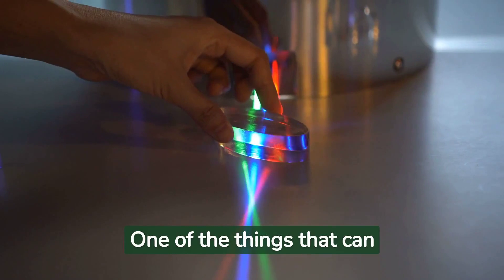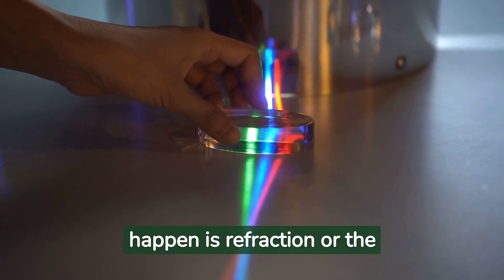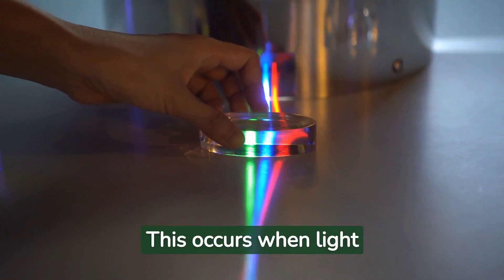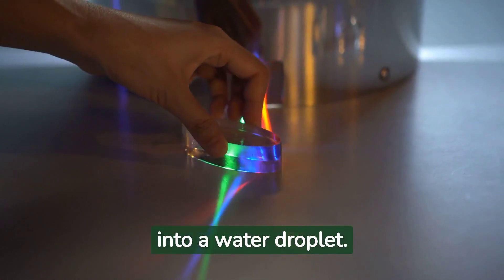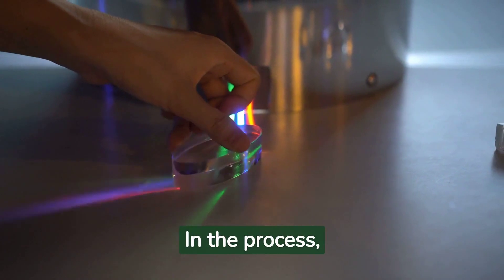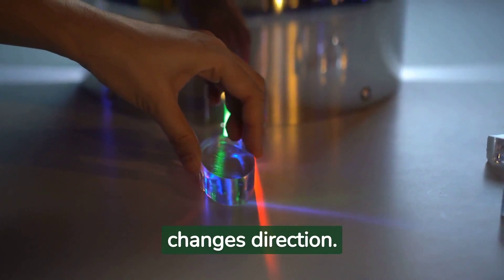One of the things that can happen is refraction or the bending of light. This occurs when light travels from one medium to another, like from air into a water droplet. In the process, the light slows down and changes direction.